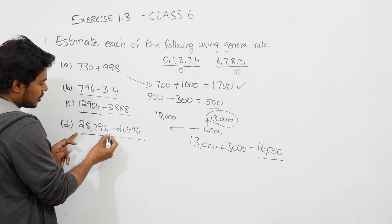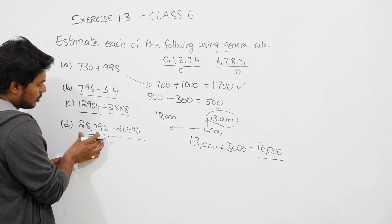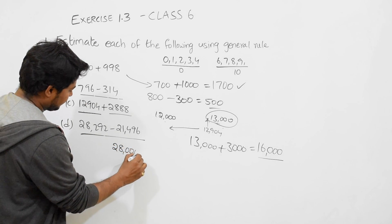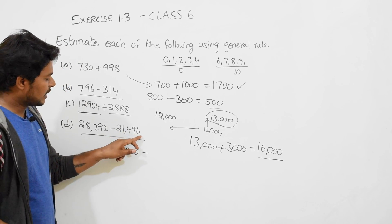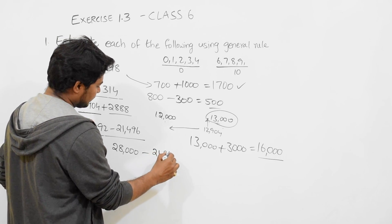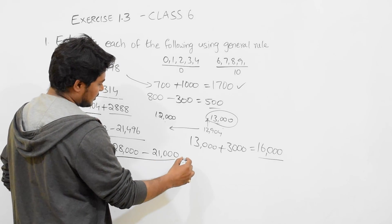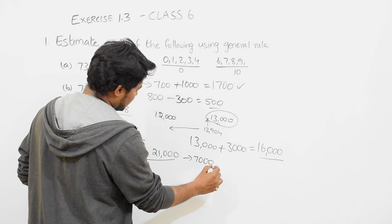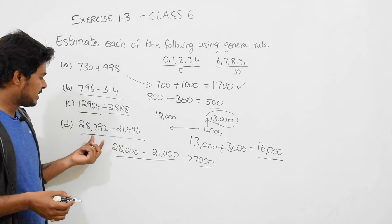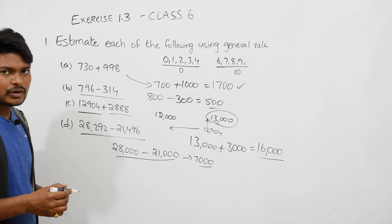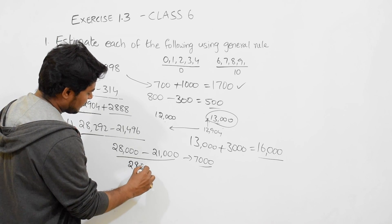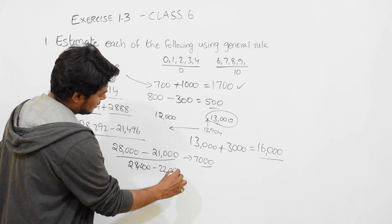Now see this: 28292 minus 21496. 28292, the close value is 28000. 21496, close value will be 21000. So 28 minus 21 equals 7000. Some people will take this as 22000, and 28 minus 22 will be 6000. That is also correct, that depends on your requirement.